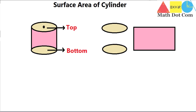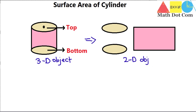So in order to find the surface area, we are making the shape easier for you. We will find the areas of these two-dimensional objects and then add them together to find the surface area of the cylinder. Keep in mind that this is a 3D object and we have converted it into 2D shapes so that you can find the area easily. When you add the areas of all these 2D shapes, you will get the surface area of the given 3D object.